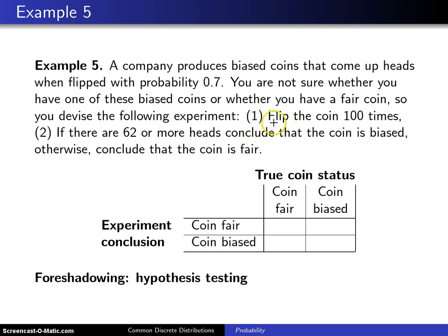Step 1: Flip the coin 100 times. Step 2: If there are 62 or more heads, then conclude that the coin is biased. Otherwise, conclude that the coin is fair.